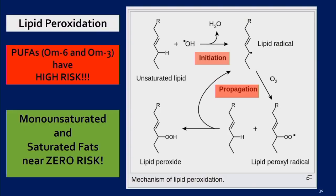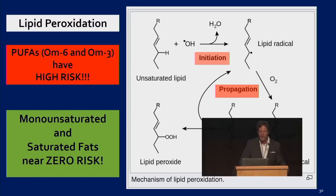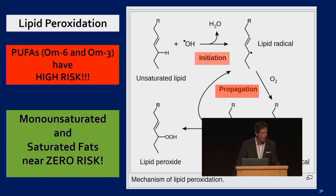In order to understand what goes wrong in the mitochondria, we have to understand lipid peroxidation. When we consume lipids, there are two potential situations: one, they accumulate in our cells and undergo peroxidation — they're oxidized, they're damaged — or two, you can burn them for fuel via beta-oxidation. The PUFAs — omega-6 and omega-3 — are at very high risk to oxidize because of their double bonds. Monounsaturated and saturated fats have almost zero risk to undergo peroxidation.